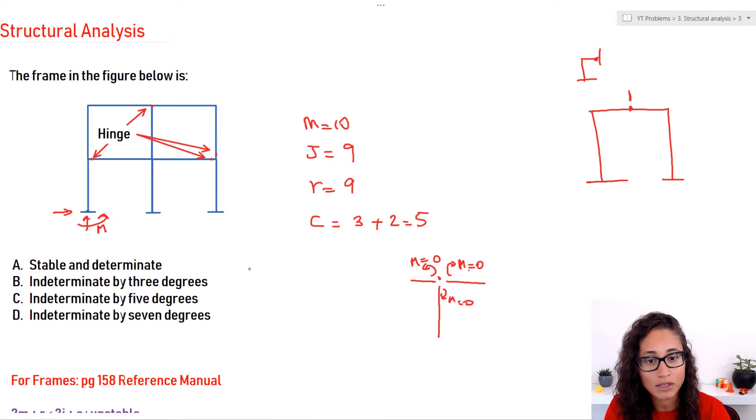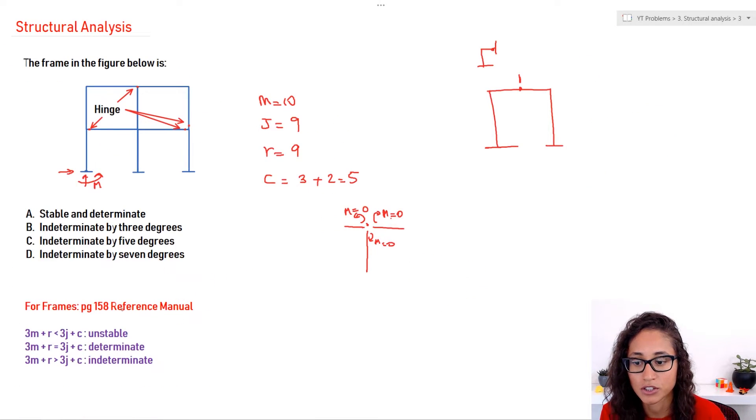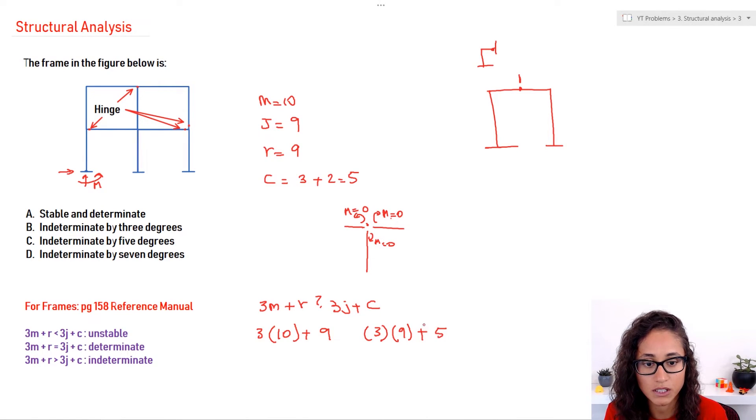So now let's plug in the numbers in our equation and then see what we have if it's determinate or indeterminate structure. We have three times M, which is 10, plus I have nine. And then we have three times the joint, which is nine, and then plus five. So C is number of hinges, and that's what we calculated here. So we have 39 here, and then here we have about 32. So this is going to be greater than this. So we have an indeterminate case.